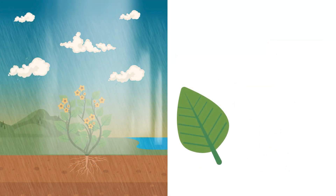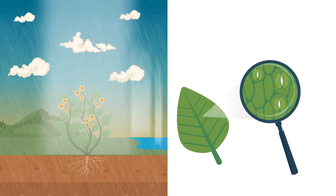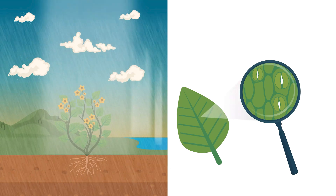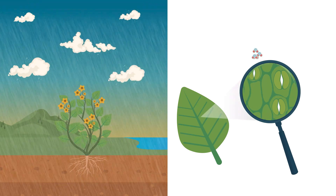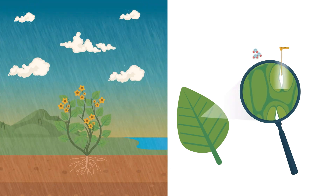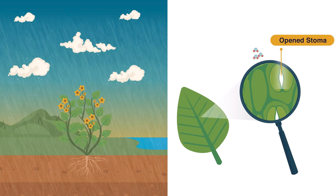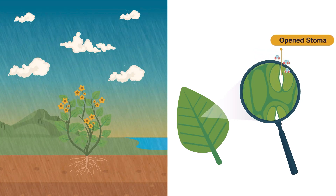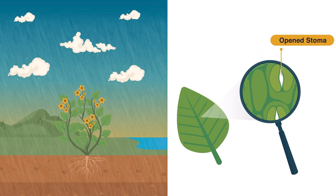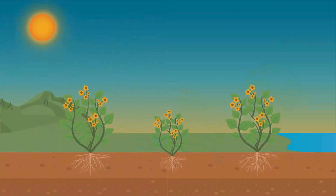But in wet regions where the air holds more water vapor, the stoma plant cells can open up more without losing water, and as a result, plants can absorb more carbon dioxide.